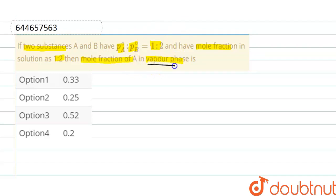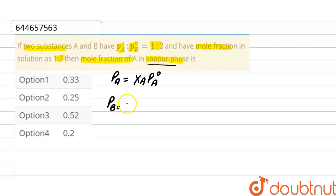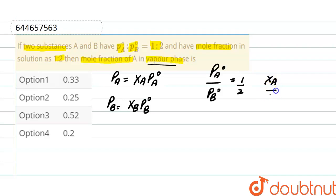According to Raoult's law, partial pressure of A equals mole fraction of A multiplied by vapor pressure of A in pure state. Similarly, partial pressure of B equals mole fraction of B multiplied by vapor pressure of B in pure state. Given: vapor pressure ratio PA° to PB° is 1:2, and mole fraction of A to mole fraction of B is 1:2.